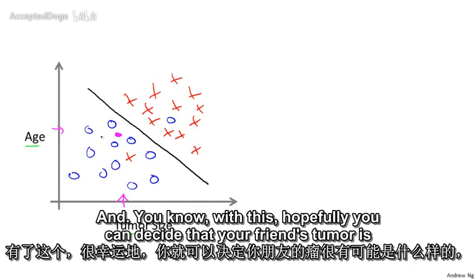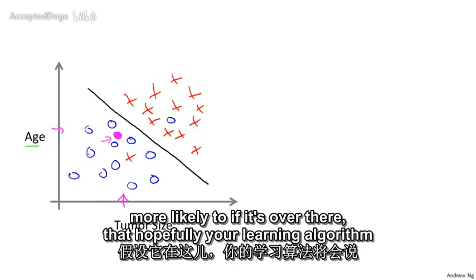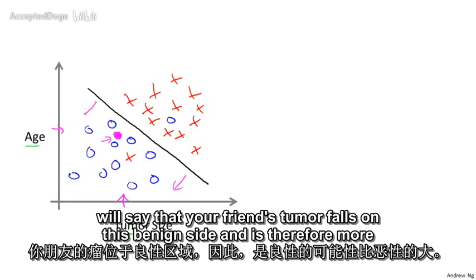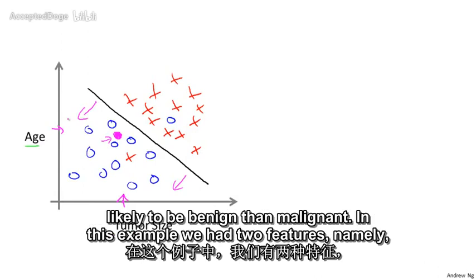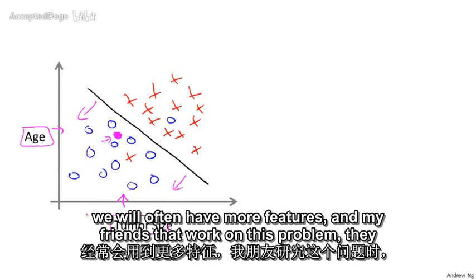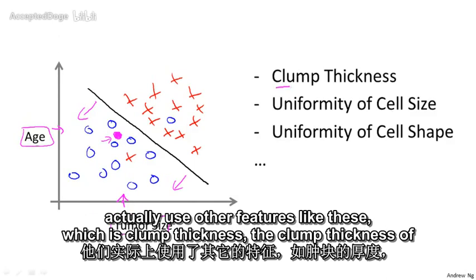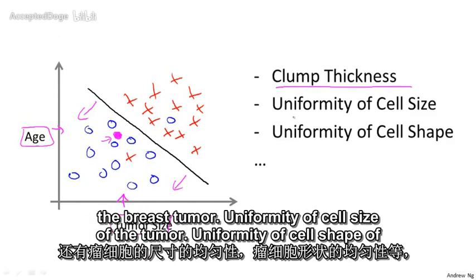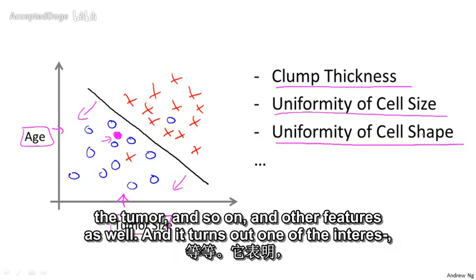With this separation, hopefully we can decide that your friend's tumor falls on the benign side and is therefore more likely to be benign than malignant. In this example, we had two features — the age of the patient and the size of the tumor. In other machine learning problems, we will often have more features, such as clump thickness of the breast tumor, uniformity of cell size, uniformity of cell shape, and other features as well.